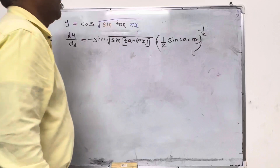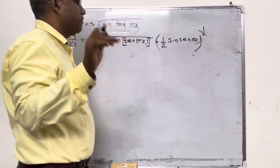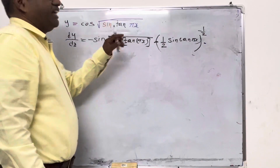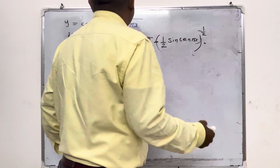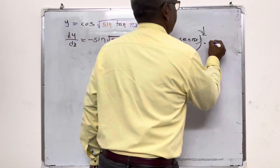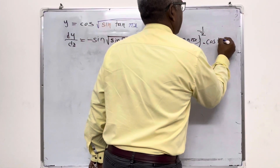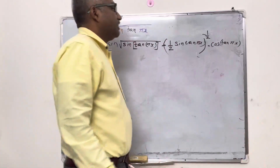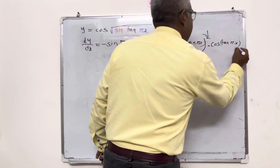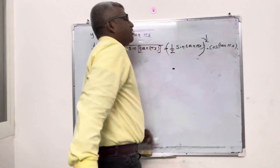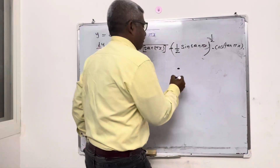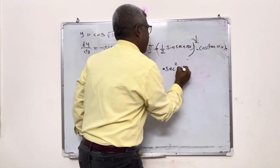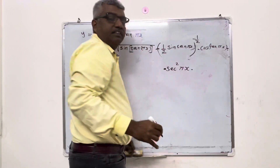The square root problem is addressed. Next, we address sine of tan pi x — the differentiation gives cos tan pi x. Then we address tan pi x — the differentiation gives secant squared pi x.